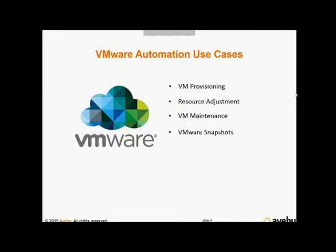VMware snapshots are another area where at some point you'll want to create and delete snapshots, usually from a long list, and doing this manually can be very painful. Finally, using automation to spin up an entire off-site data center full of VMs in the event of a disaster may actually be the most business-critical use case. There are numerous regulations surrounding business continuity requirements, which is a key reason why disaster recovery procedures that include virtual machines should be automated.